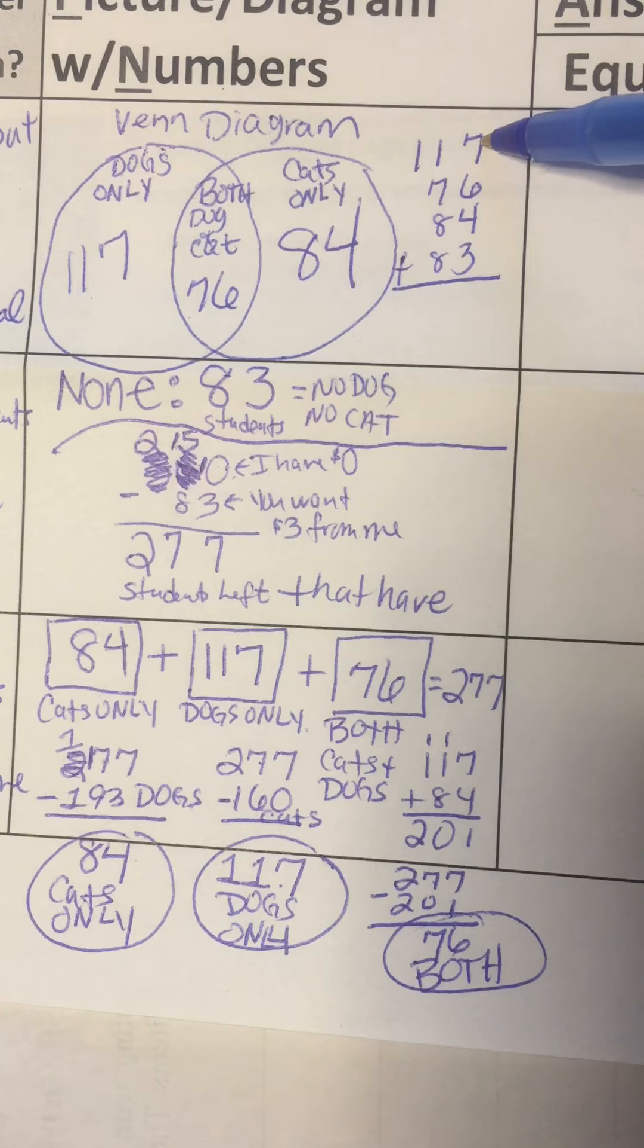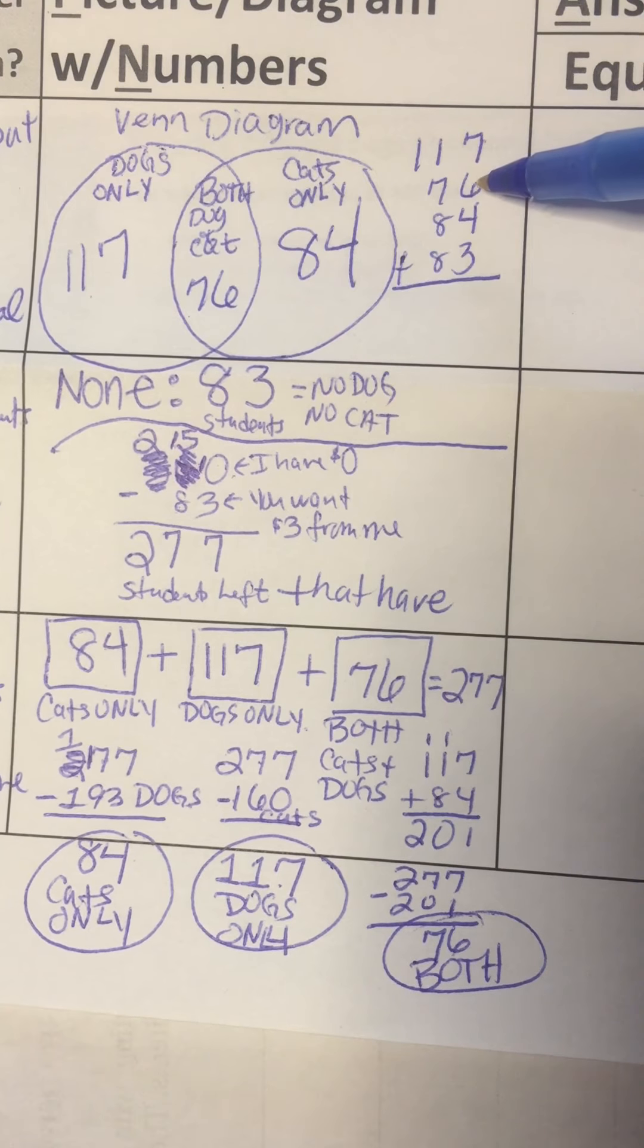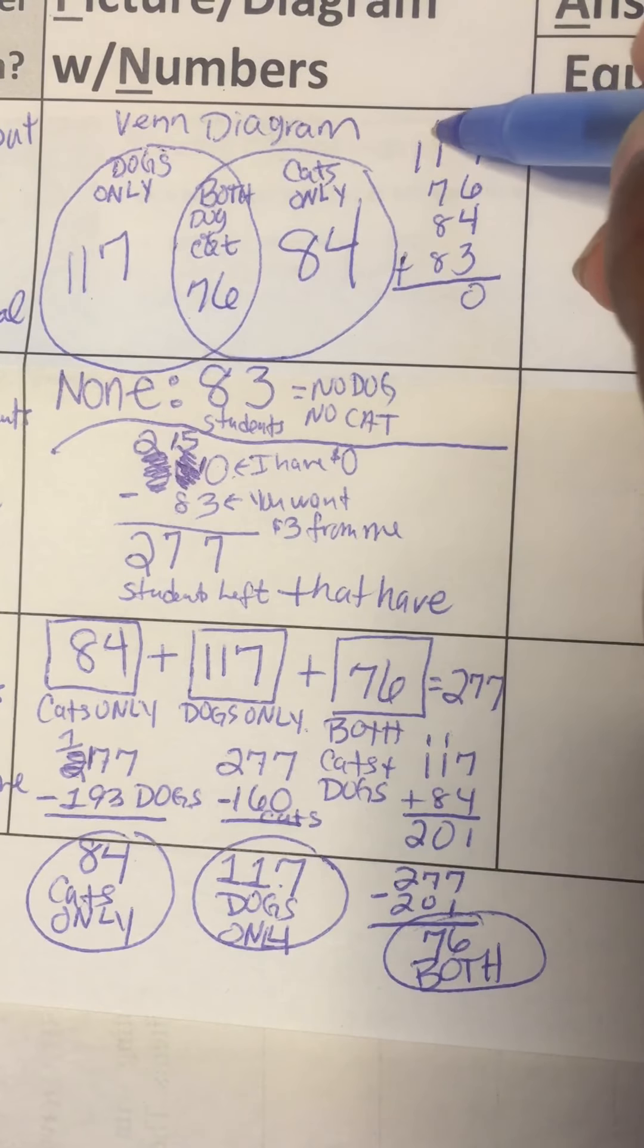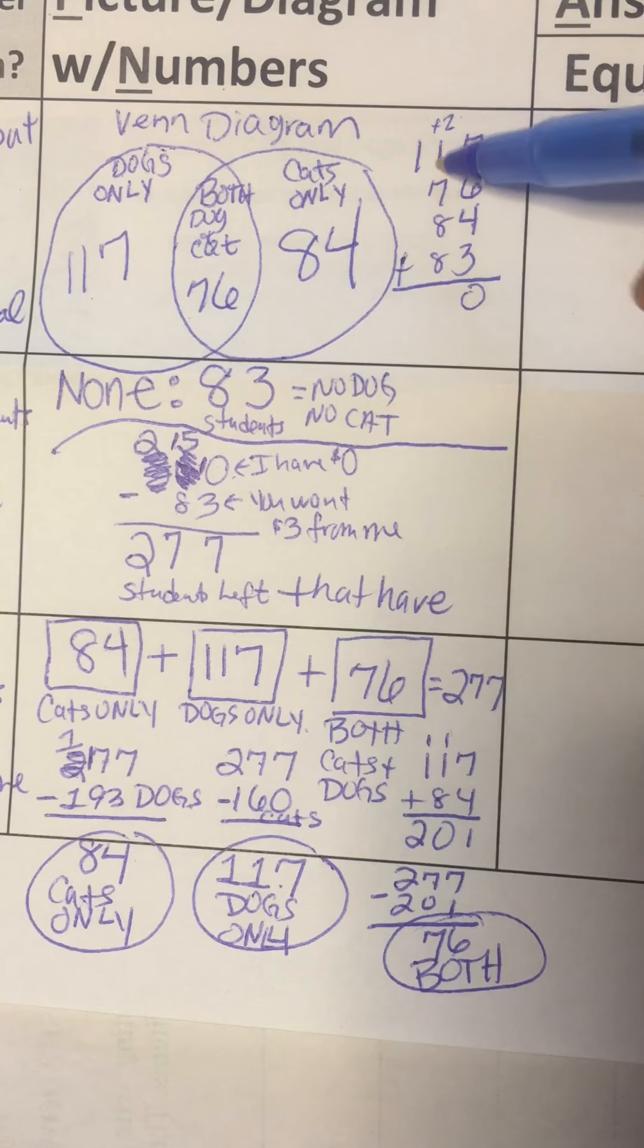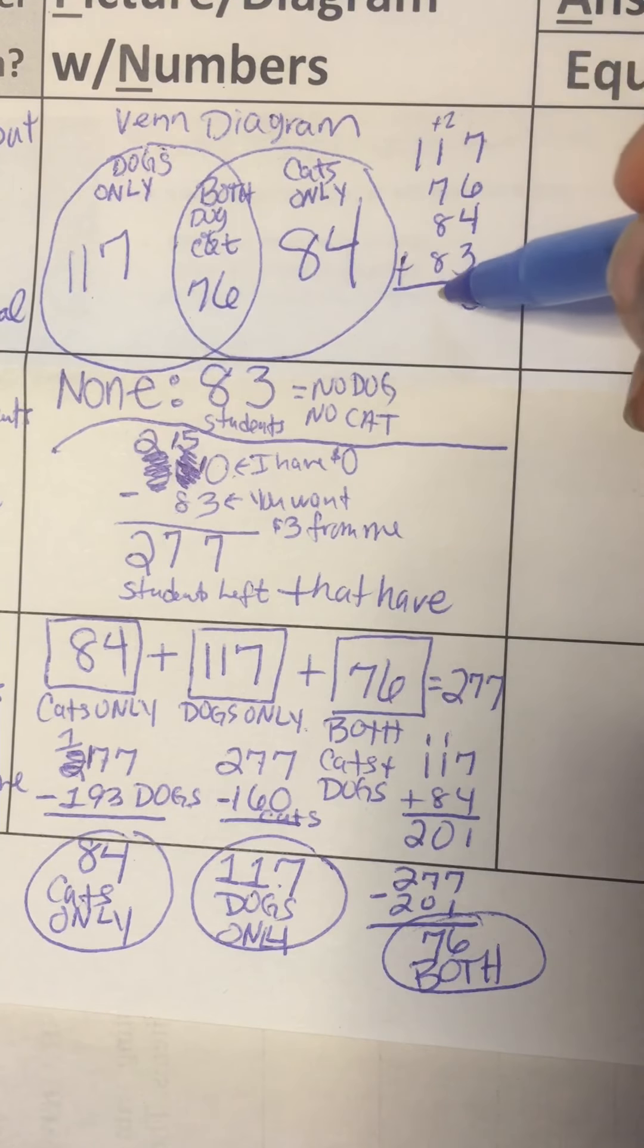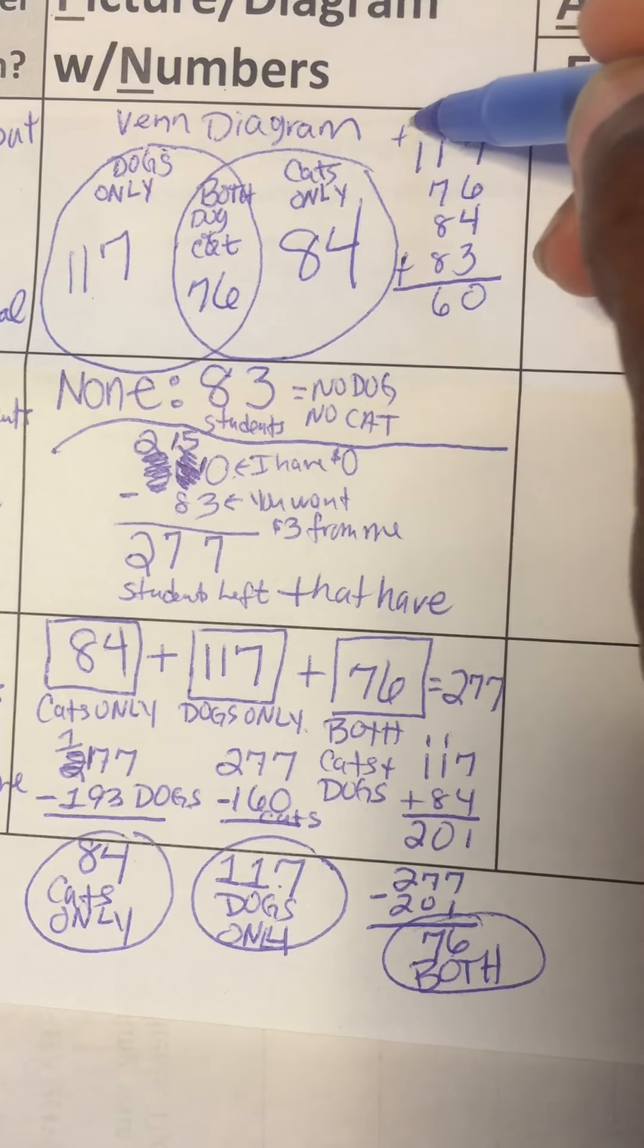So 6 plus 7 is 13, 14, 15, 16, 17, 18, 19, 20. You put a 0, carry the plus 2. That's 3 plus 7, which is 10, 18, 19, 20. So 26. You put a 6, carry the 2.